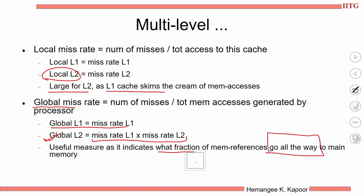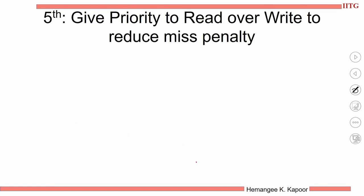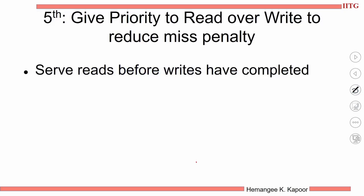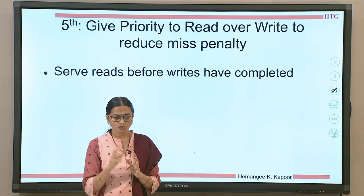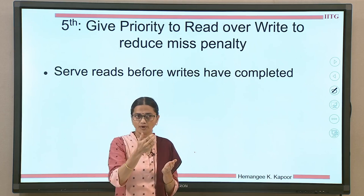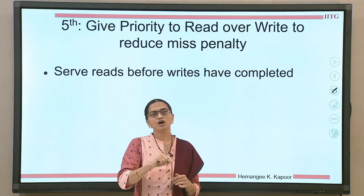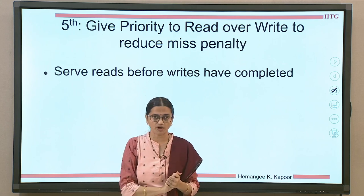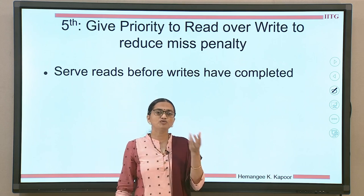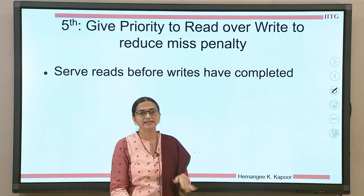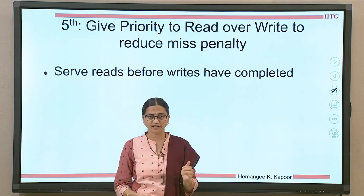That was multi-level caches to reduce miss penalty. The other option to reduce miss penalty is to give priority to reads over writes. When a cache encounters a read access and the read misses — the block is not present in the cache — we go to the next level to bring the block, and when bringing it, it replaces an existing dirty block. To replace that block, you first have to write back the existing block and only then load the new block. So the read completes only after the writeback, which takes long latency.